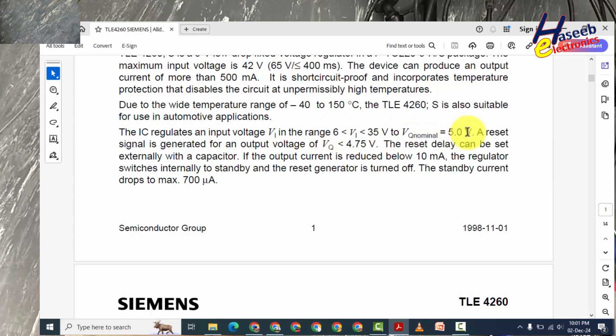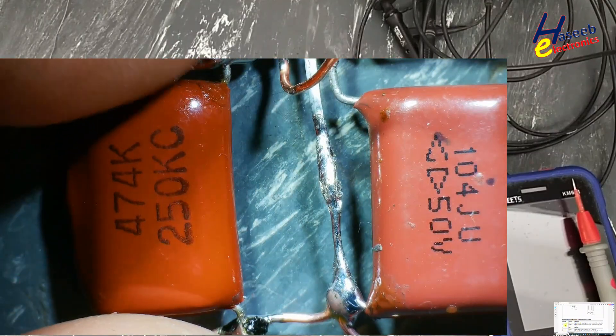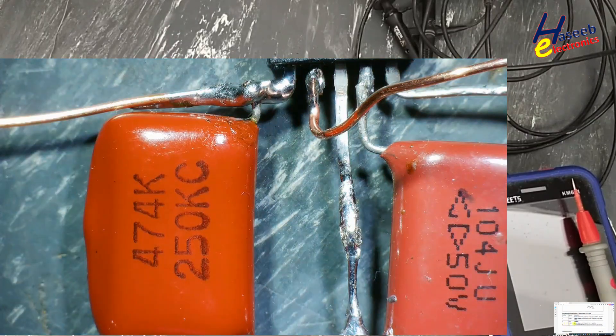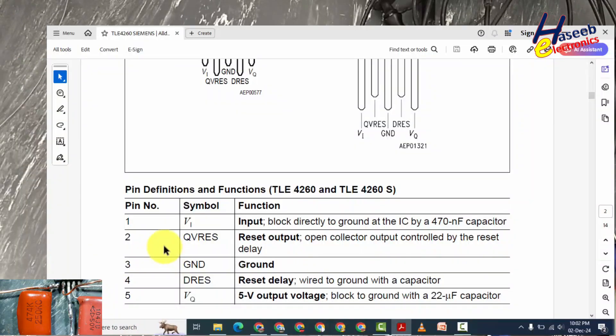Pin 1 is input voltage, Pin 2 reset output, Pin 3 ground, Pin 4 reset delay capacitor, Pin 5 is 5-volt output. So Pin 2 is open collector output, that means we need a pull-up resistor.